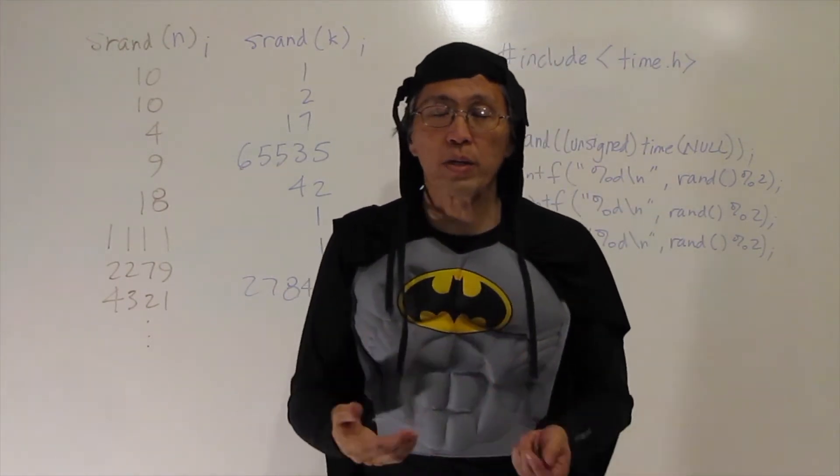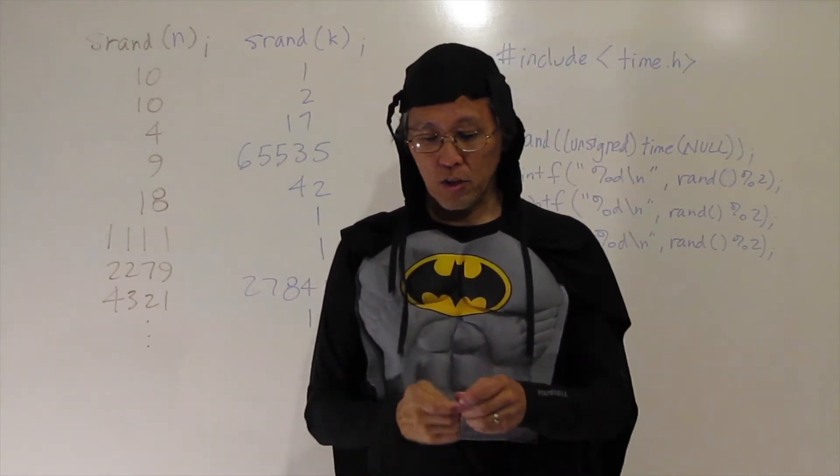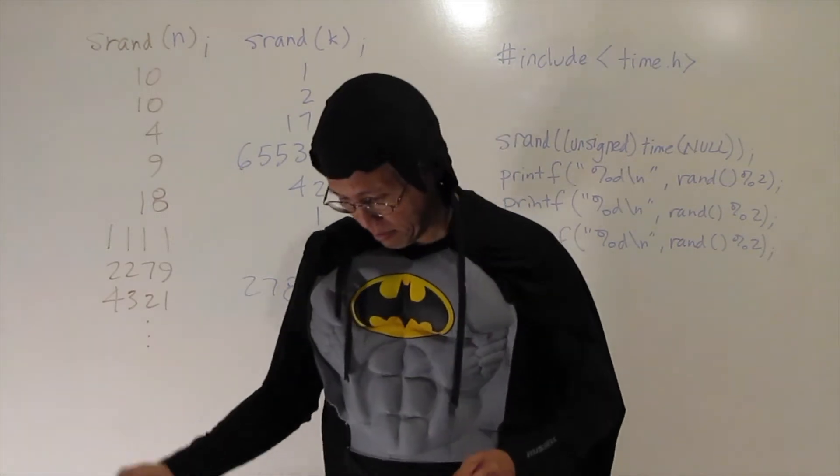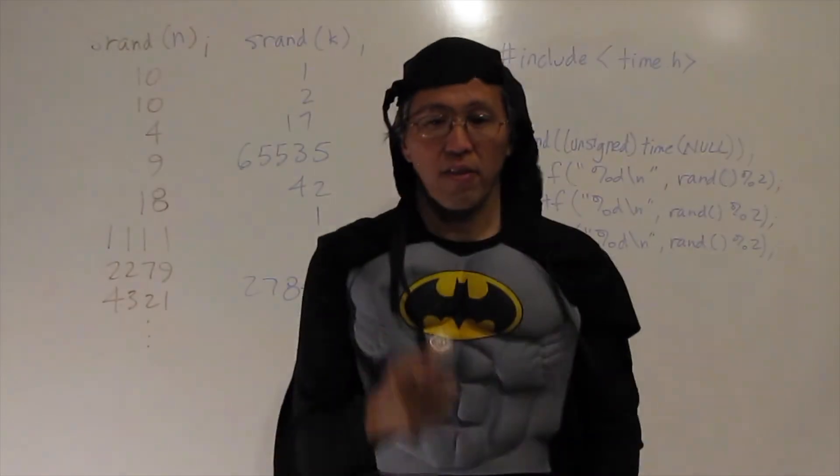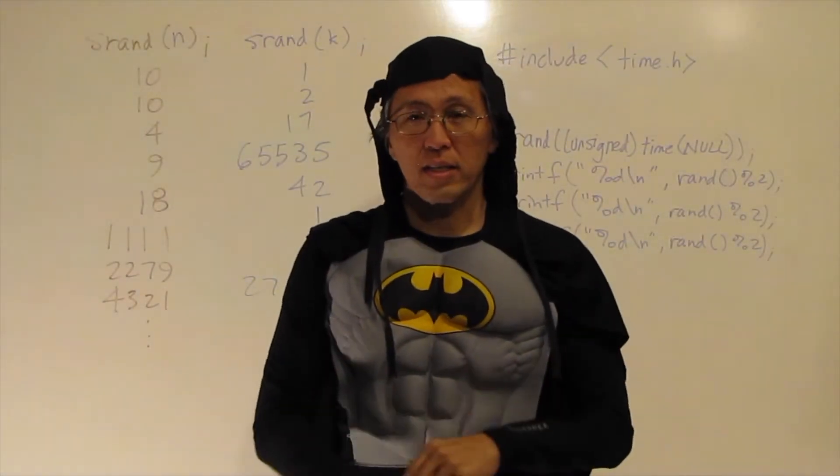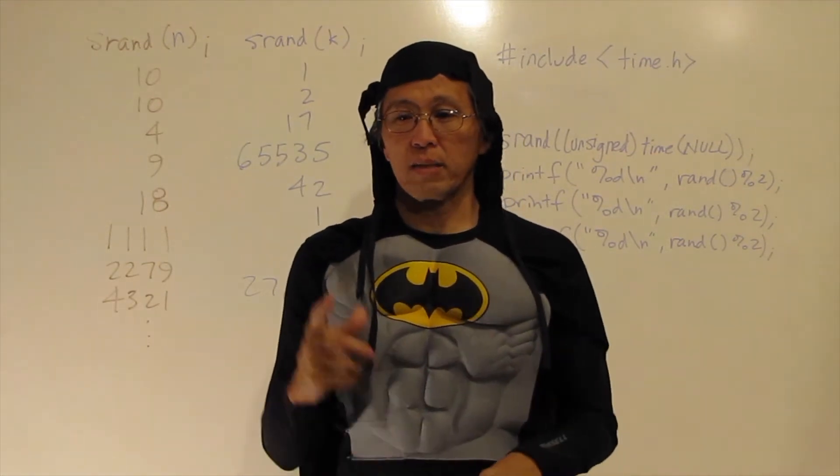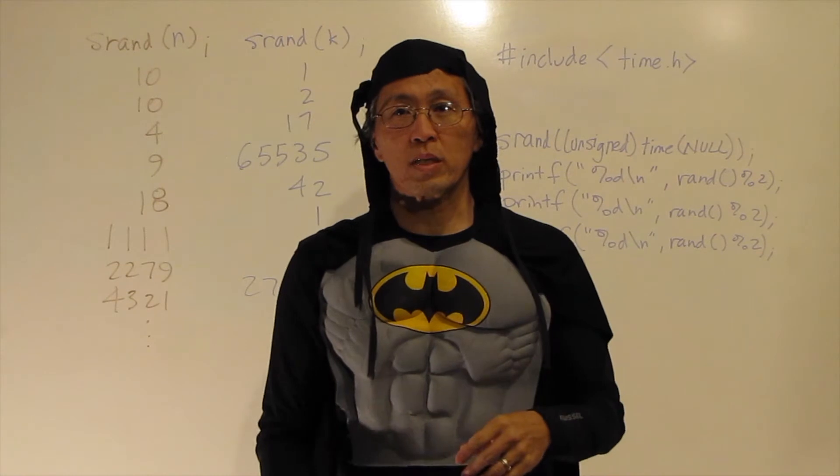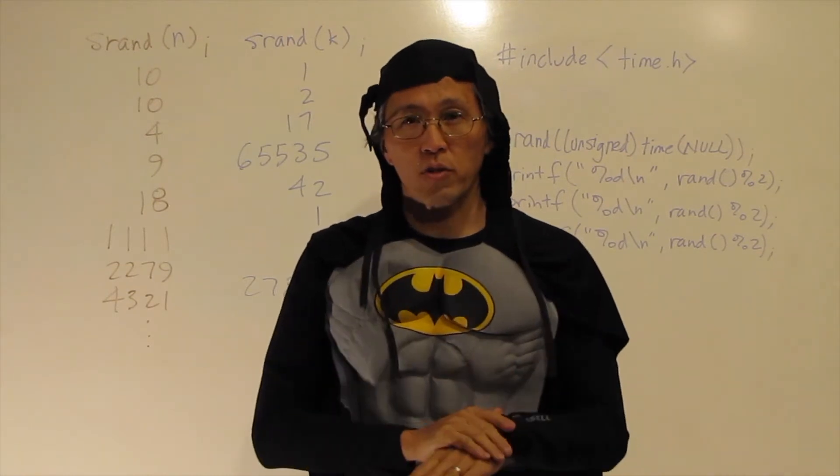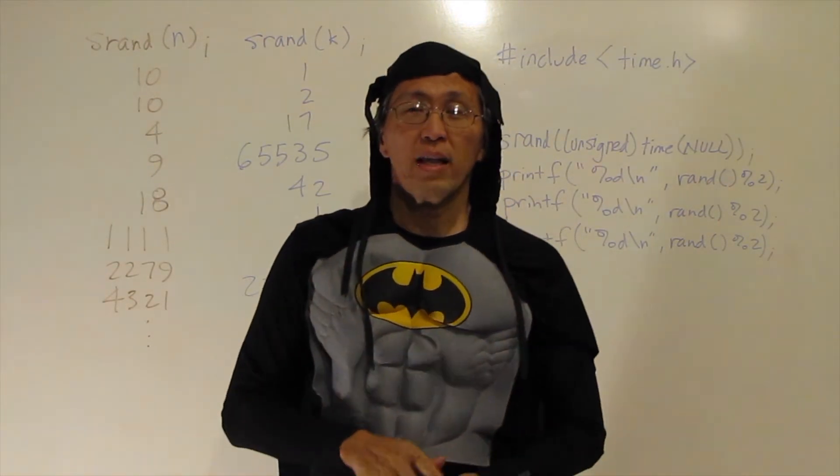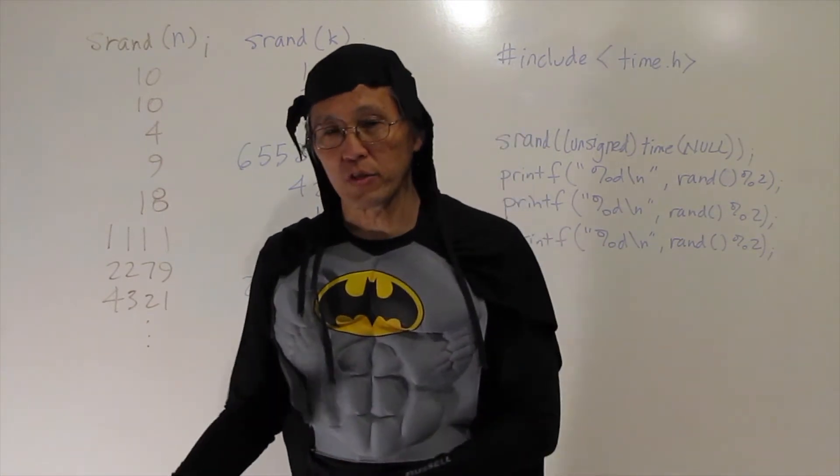The nice thing about SRAND is that it produces numbers that are fairly random or they seem to be random. What determines a real random number? Well, like a coin toss, this coin toss does not determine what happens on this coin toss, which does not determine what happens on this coin toss, and so on and so forth.